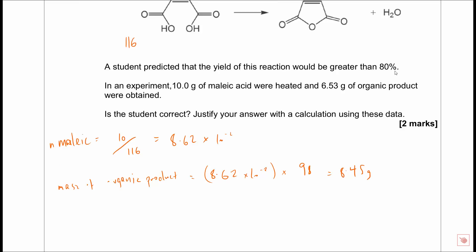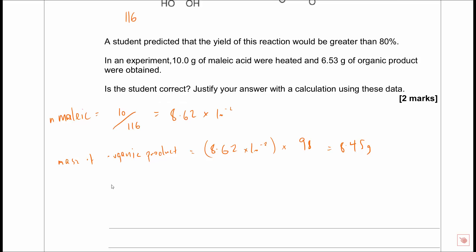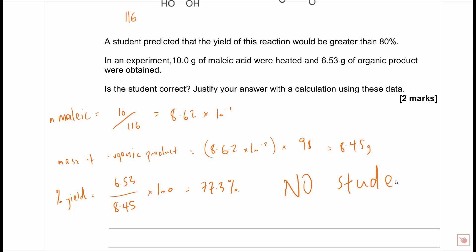That whole process gets you one mark. The second mark is for working out the yield and stating whether the student is correct. Percentage yield = (6.53 ÷ 8.45) × 100 = 77.3%. That is clearly less than 80%, so the student is wrong. If you don't include that statement, you won't get the second mark - you need both the correct percentage and the conclusion that the student is incorrect.